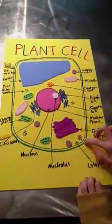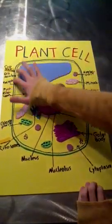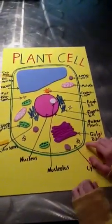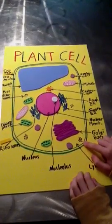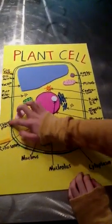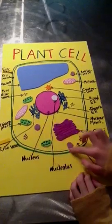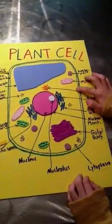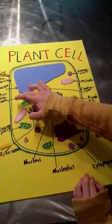This green line that surrounds everything is the cell wall. This is the cell membrane, this blue skinny line. These are the free ribosomes.